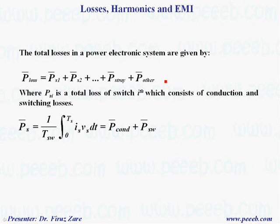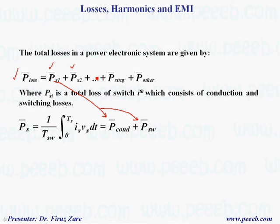The total losses in a power electronic system are given by this equation. If you have n switches, the loss in each switch consists of conduction loss plus switching loss. We also consider extra losses associated with stray components and other components like microcontrollers, filters, and so on. This is the total loss, which helps us find the efficiency of the system.